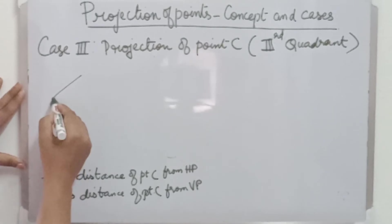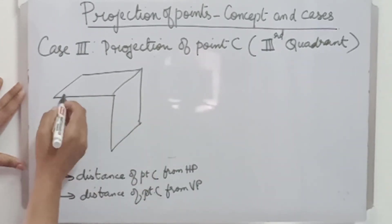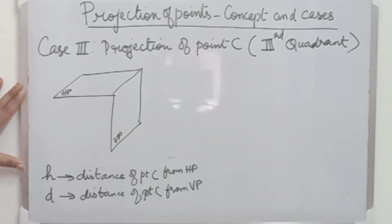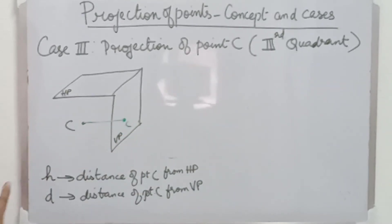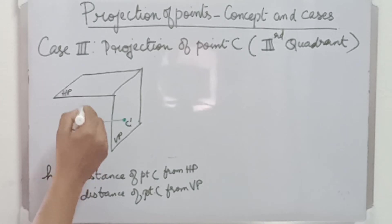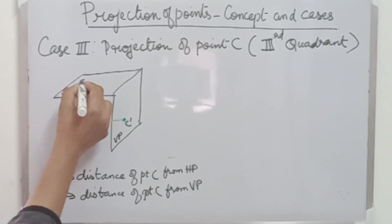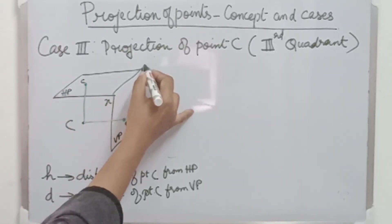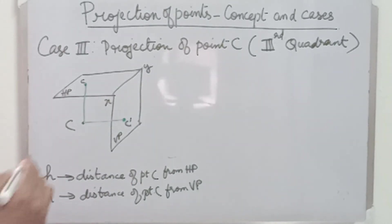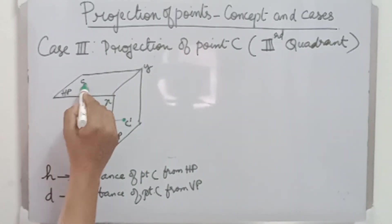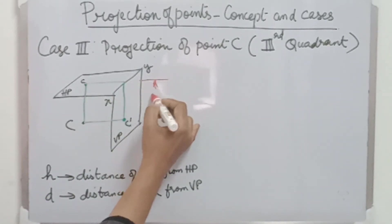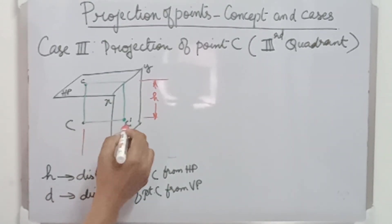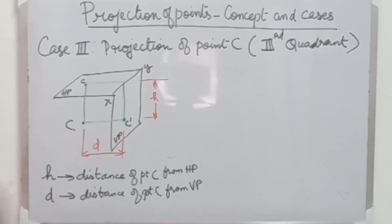Next, let us consider case 3 — projection of point C in the third quadrant. I am drawing the third quadrant pictorial view, marking HP, VP, and point C which is lying in the third quadrant. Drawing the front view and marking it as small C dash, and drawing the top view marking it as small letter C, along with the reference line. The distance of point C from HP is H and from VP is D.